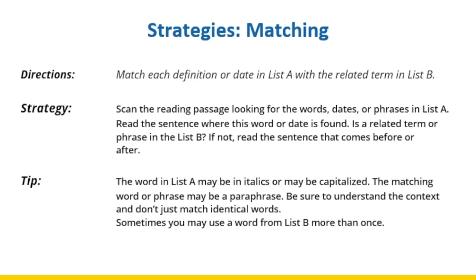Now we are going to learn our first strategy: matching. In the IELTS exam you'll be asked to match each definition or date in List A with a related term in List B. The main strategy is to scan the reading passage looking for the words, dates, or phrases in List A, then read the sentence where that word or date is found and ask yourself if a related term or phrase is in List B. If not, read the sentence before or after. Remember the word in List A may be in italics or capitalized, and the matching word or phrase may be a paraphrase — so understand the context and don't just match identical words. Sometimes you may use a word from List B more than once.